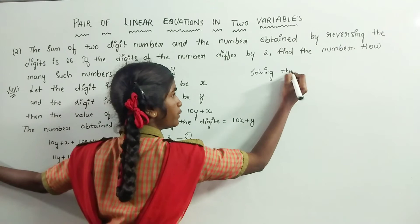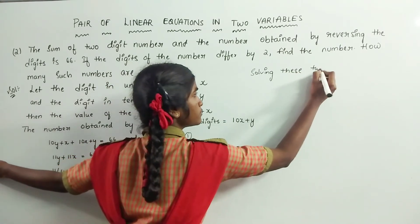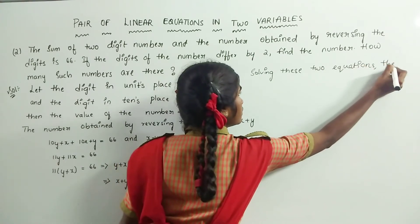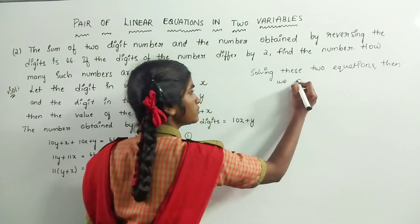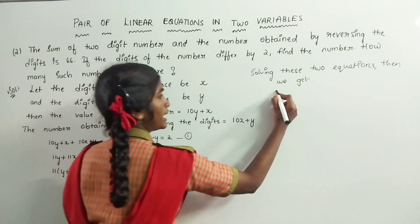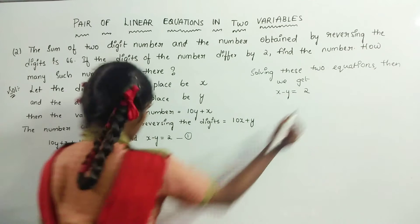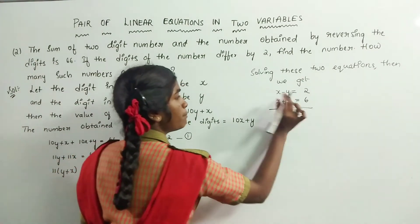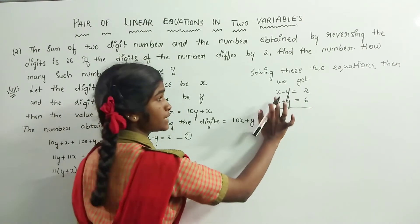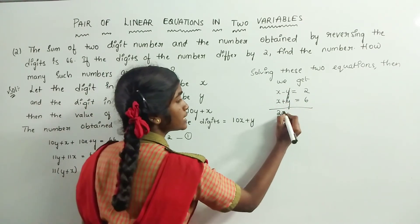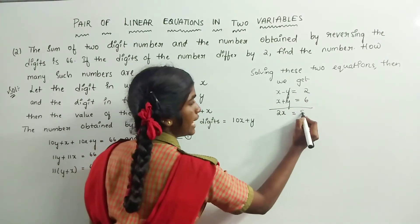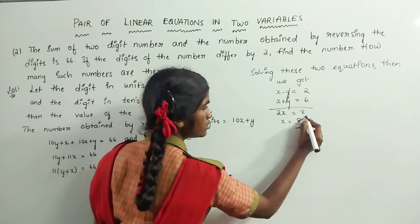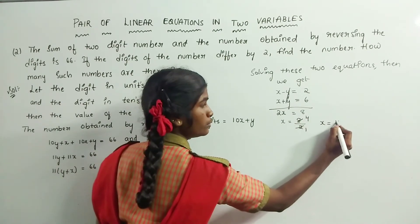Solving these two equations, we have x minus y equals 2 and x plus y equals 6. Adding them, y cancels out. 2x equals 2 plus 6, which equals 8. Therefore x equals 8 divided by 2, which equals 4.